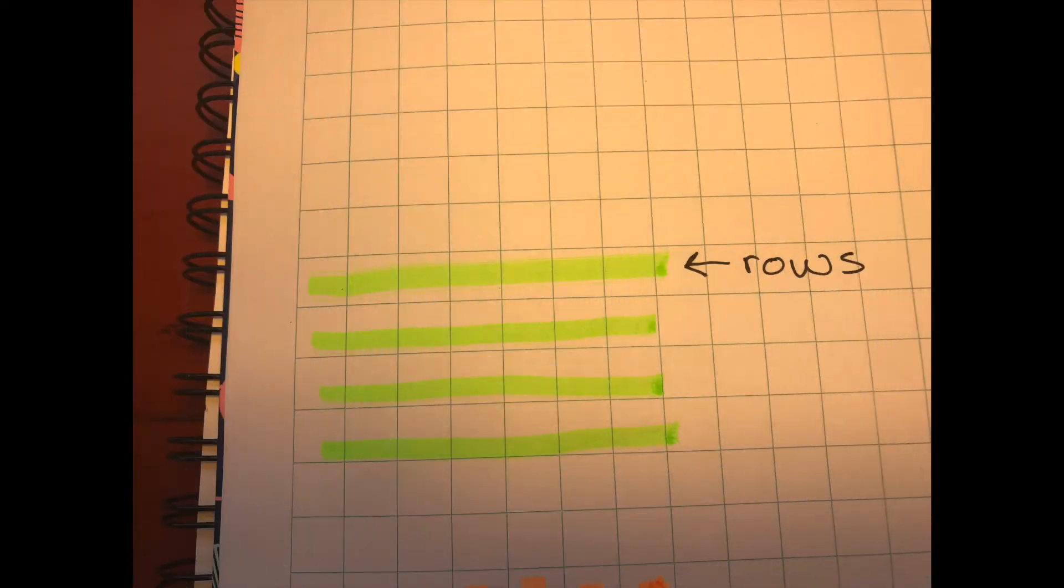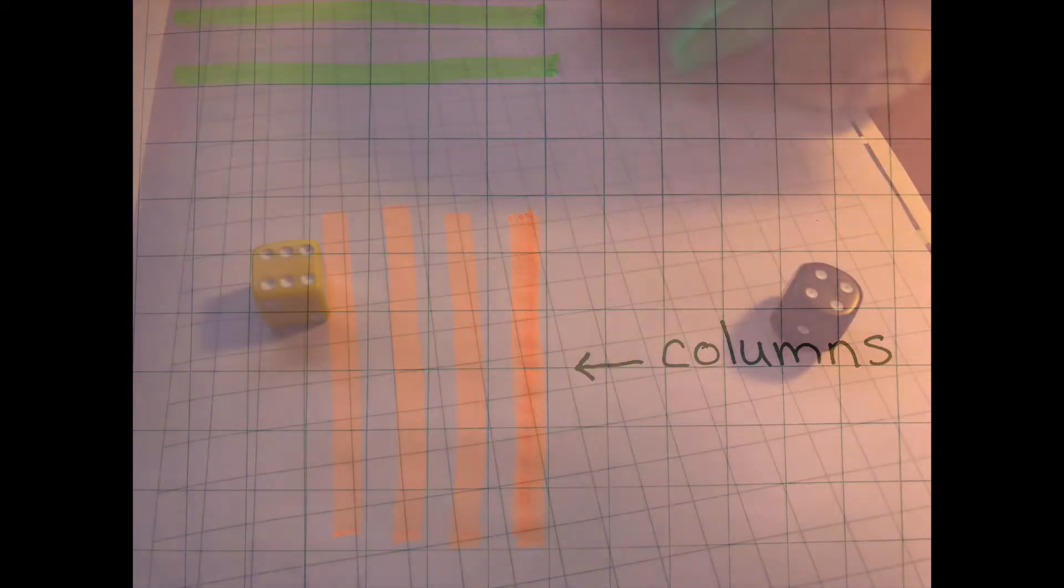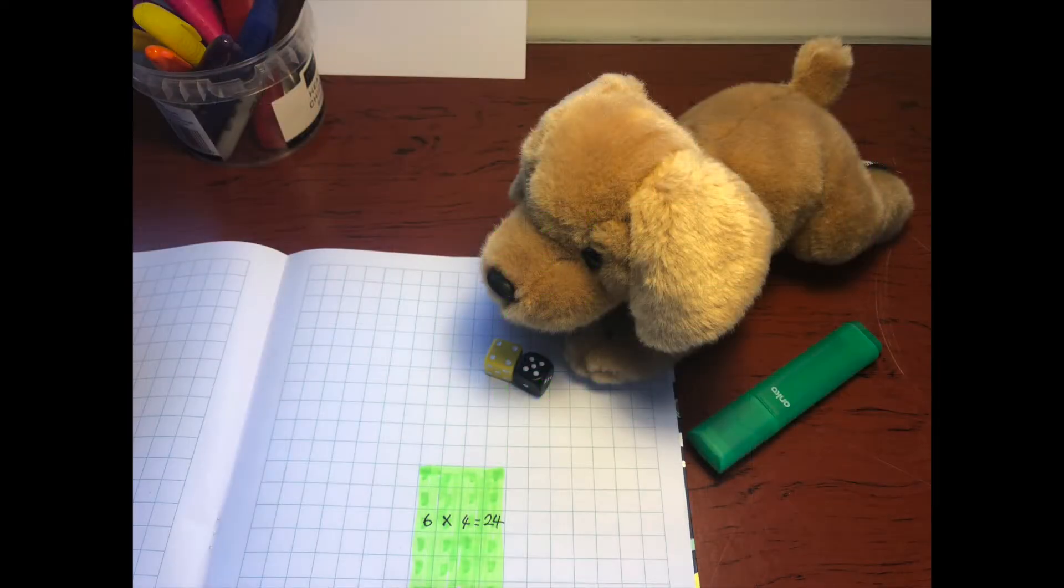Monty needs to decide if he is going to use four rows or four columns. Or will he have six columns and four rows? What did Monty choose? Six rows, four columns. This is what six times four looks like as an array.